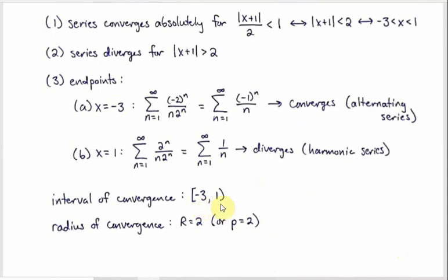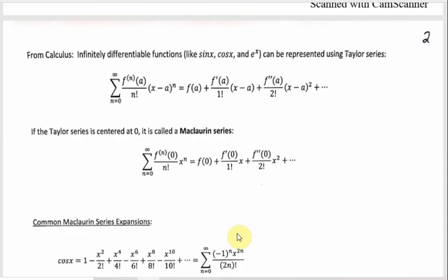For the interval of convergence, we include negative three and exclude one, so it's a bracket around negative three and a parenthesis around one. The radius of convergence comes from the ratio test step — depending on notation, either R or rho — and the radius of convergence is two.